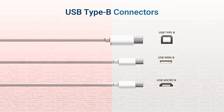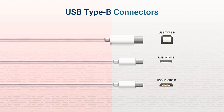USB Type-B is the largest connector and is commonly used to connect printers, scanners, routers, external hard drives, or other large devices. The Mini-USB, or USB Mini-B, is a small connector that was popular for portable electronics like digital cameras and some cell phones. The Mini was replaced by the Micro connector. The USB Micro-B is even smaller than the Mini, with one configuration for USB 2.0 and a different configuration for USB 3.0. These connectors are widely used on smartphones.